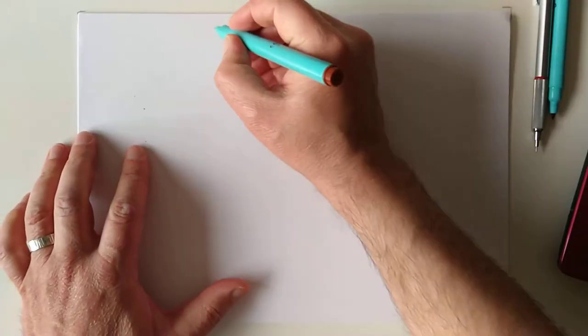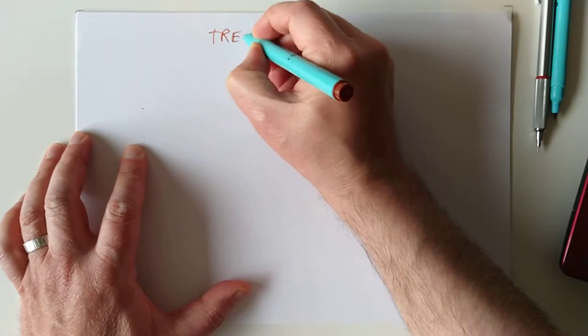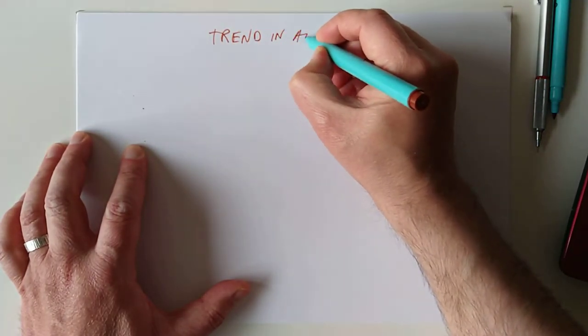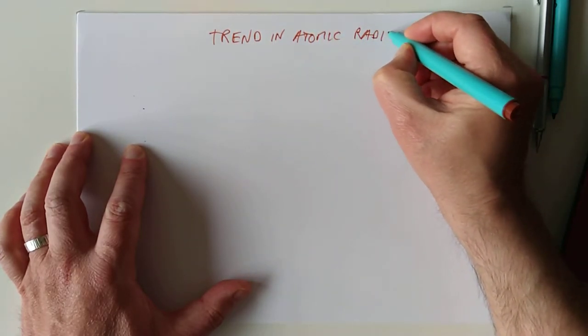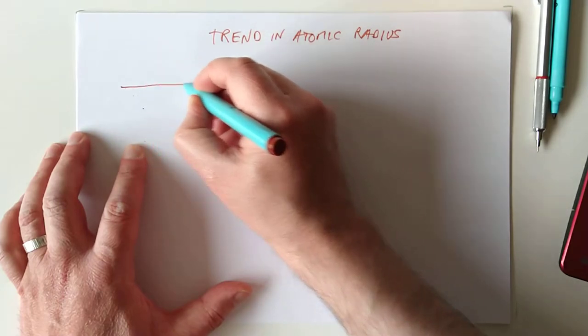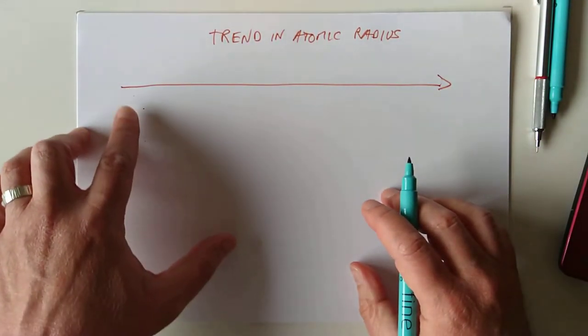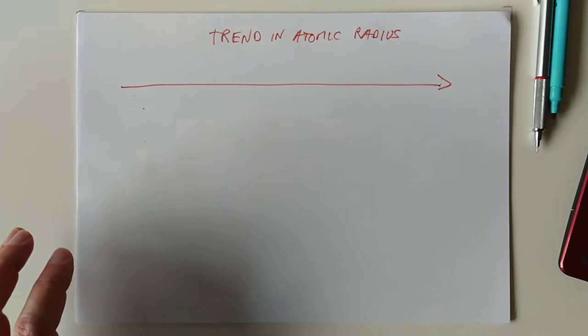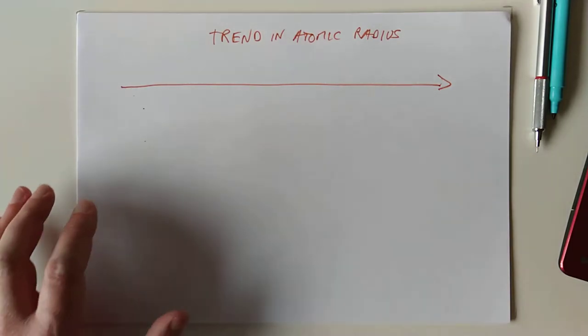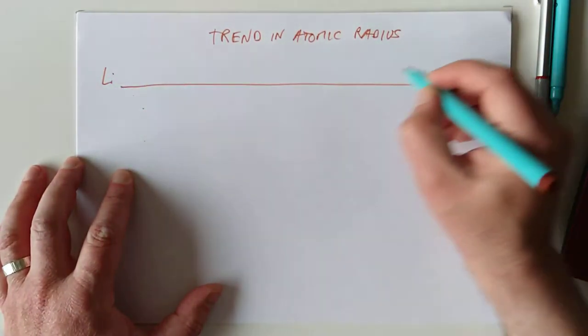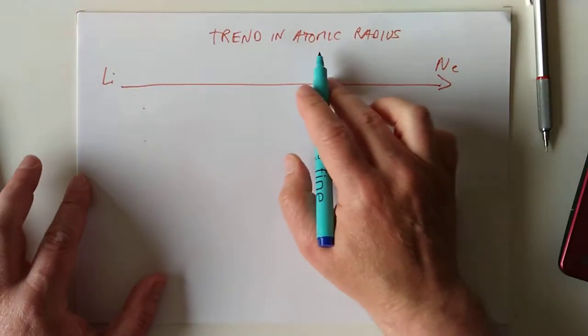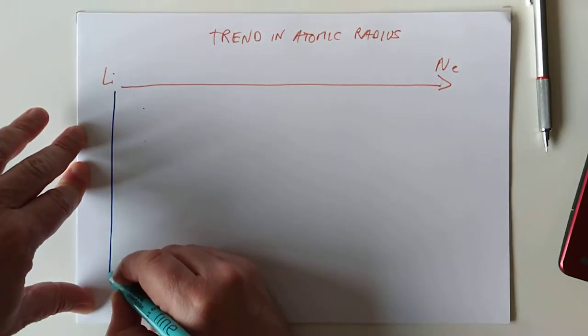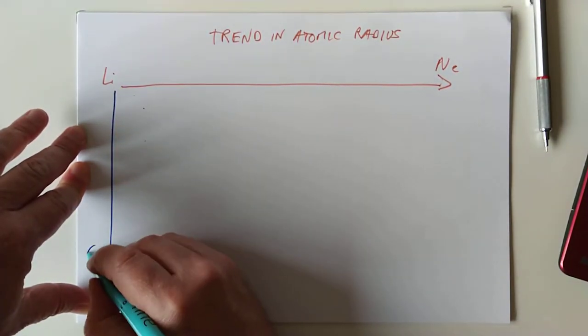The first one I think we're going to tackle today is the trend or pattern in the atomic radius. In other words, the size of the atoms. How does the size of the atoms change as you go across a period, say, from Lithium across to Neon? And also, how does the size of the atomic radius change as you go from Lithium down to the bottom of Group 1, down to Cesium, say?